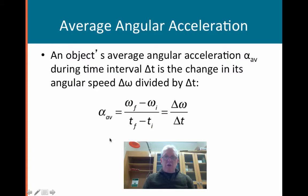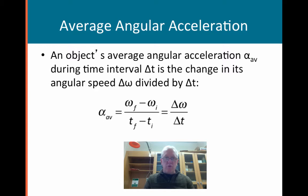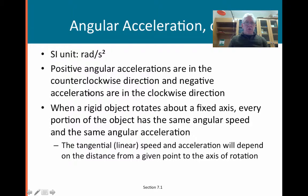And acceleration — another thing we've talked about with linear motion that we can now apply to rotational motion. Alpha is the symbol for angular acceleration, and as you would imagine, it's the change in angular speed over time. We'll use this to develop equations very similar to the kinematic equations for linear motion. The SI unit is radians per second squared. Positive accelerations are counterclockwise, and negative accelerations are in the clockwise direction.